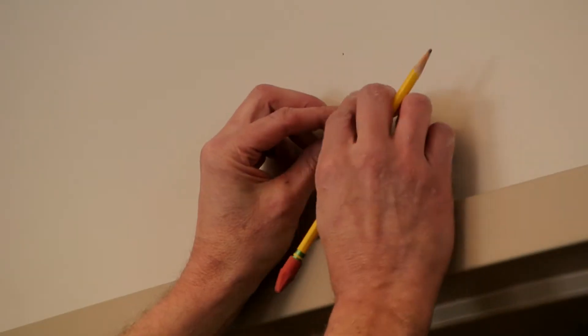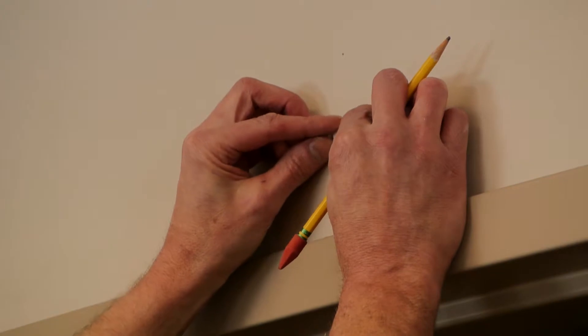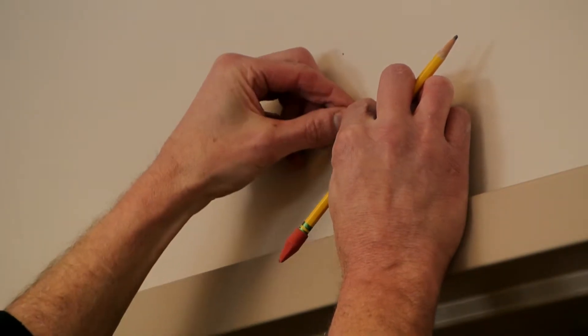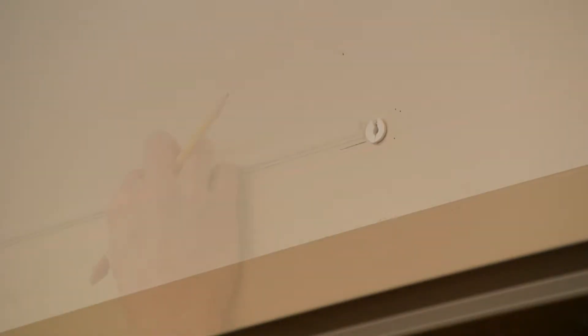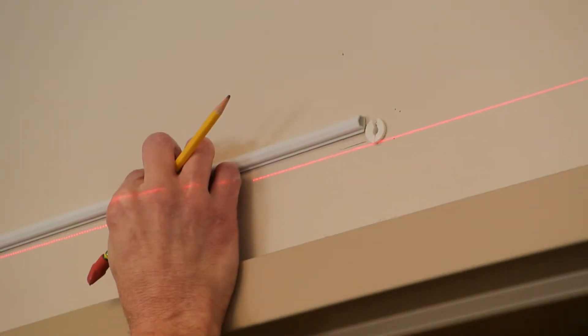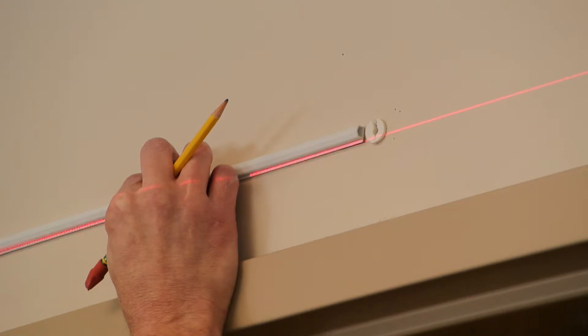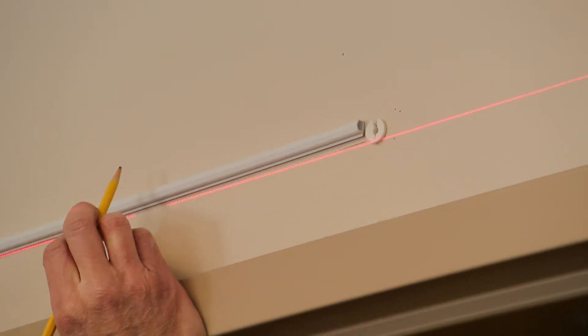Using the access deployment accessory, create markings for the micro molding at your desired installation angle. If possible, use a laser line to assure proper installation alignment. Create marks along the laser line.